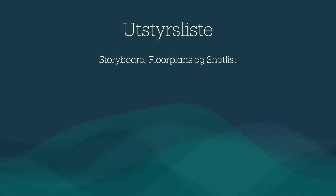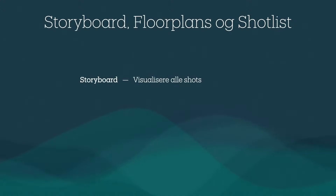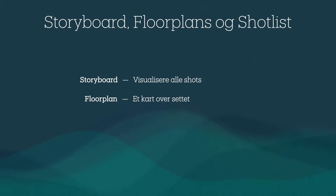En slags videreutvikling av nedbrekket er å tegne og sette opp storyboard, floorplans og shotlists for alle scener. Storyboard har til hensikt å visualisere alle shots for å raskt kommunisere til crewet hvordan resultatet skal se ut. En floorplan er et kart over settet som detaljert beskriver skuespillere, kamera, rekvisitter og så videre sine plasseringer og bevegelser i scenen. Den kanskje viktigste funksjonen til en floorplan er å kommunisere scenens blokking, altså bevegelsene til skuespillere underveis.